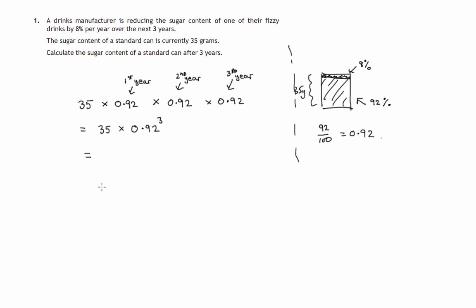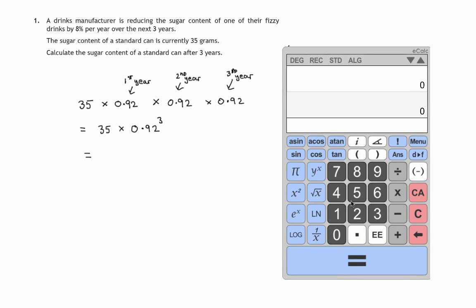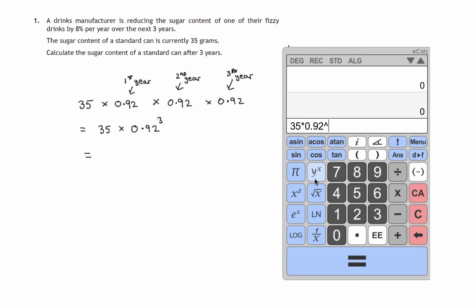Now we're in paper 2, so we get the calculator going for that. 35 times 0.92 raised to the power of 3. What does that come to? It comes to 27.2540 and so on.